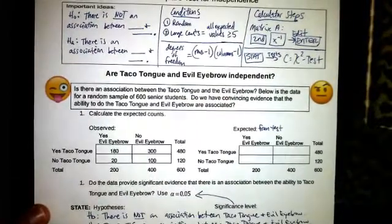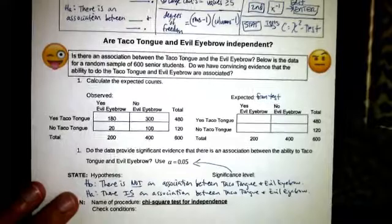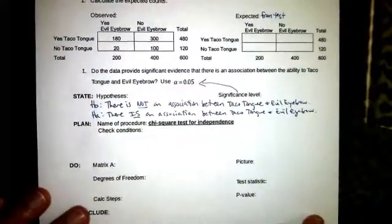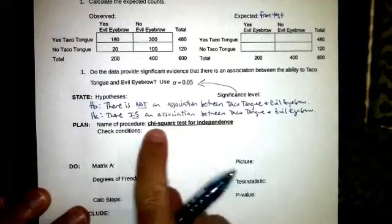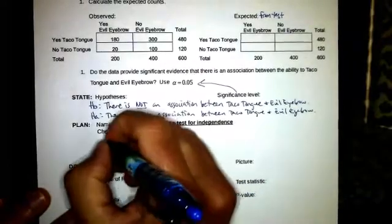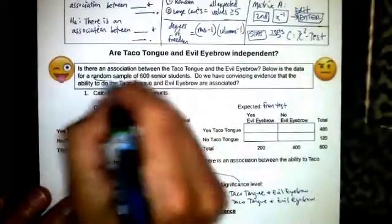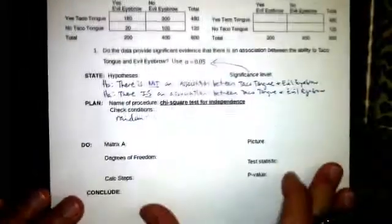Our hypotheses again, our null hypothesis there's not an association between those two, alternative there is an association between those two. Our procedure, chi-squared test for independence. We need to check and make sure that it is random and I believe we do have a random sample.